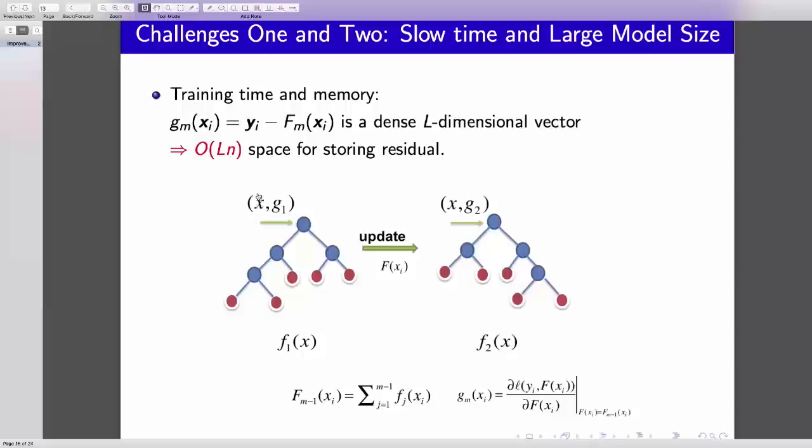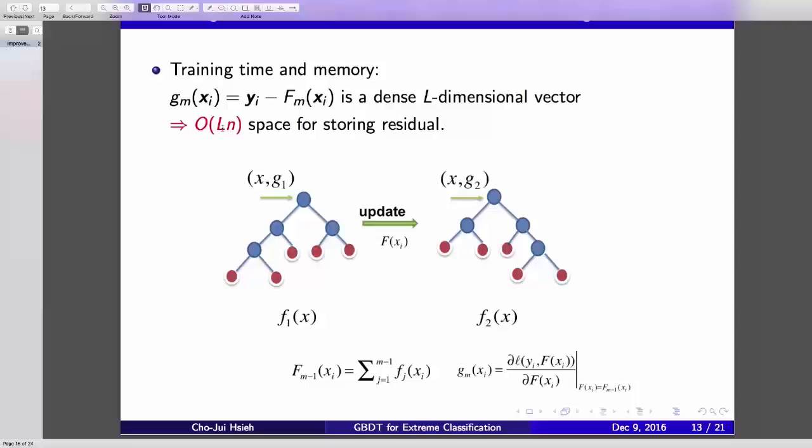As I mentioned before, after training the first tree, you have to compute the gradient. Even if the observed label Y is a sparse vector, the gradient will always be a dense vector. After training the first tree, the gradient, which is the residual in the square case, will be a dense L dimensional vector for each training data. In this case, you cannot specify it, and the training will be order L times N, and the model you need to store is also order L times N. It's 1 million by 1 million in some datasets, so you cannot do this.